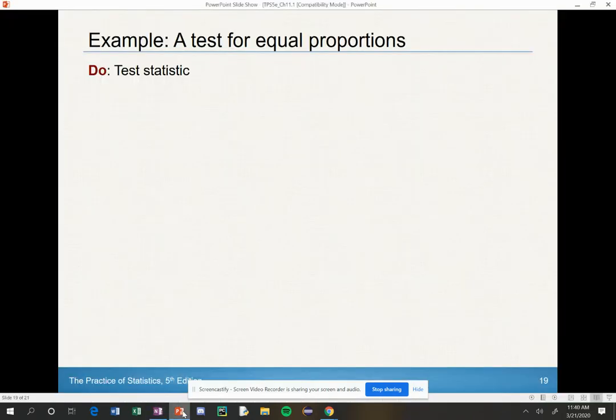Okay, we are back. We just finished up the first two portions of the four-step process: the state and the plan. So now we're talking about the do. This is all of our calculations.